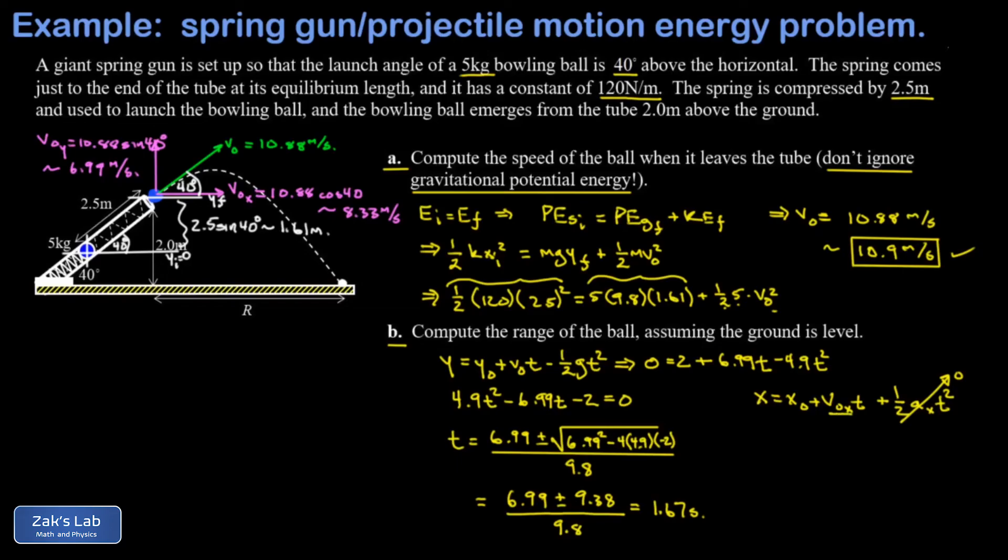By assumption here, we're going to put our initial position at 0, and then the final position will be the range. So we plug in our initial x velocity, and that was 8.33 meters per second. We multiply it by how long it was moving that fast before it hit the ground, that was 1.67 seconds. And it turns out the range of this bowling ball is 13.9 meters.